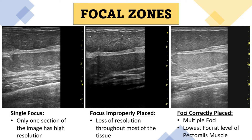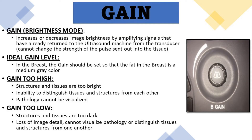There are three primary brightness controls on an ultrasound machine: gain, TGC, and output power. The gain control increases or decreases image brightness by amplifying signals that have already returned to the ultrasound machine from the transducer — you cannot change the strength of the pulse sent into the tissue with the gain control. In the breast, the gain control should be set so that the fat in the breast is a medium gray color.